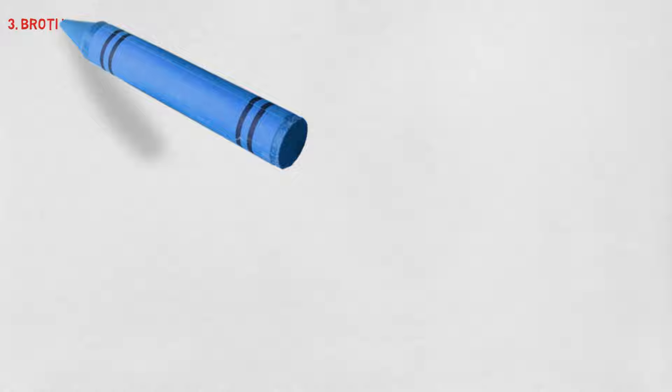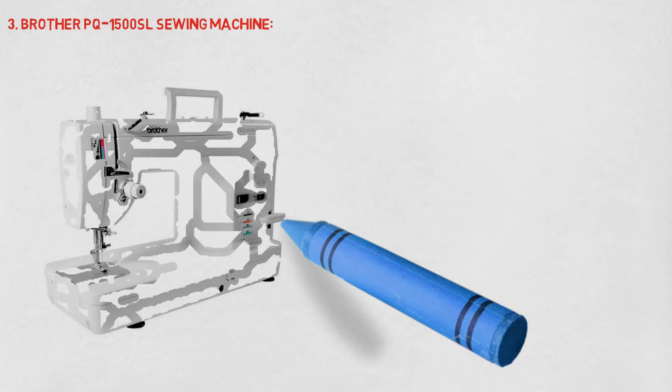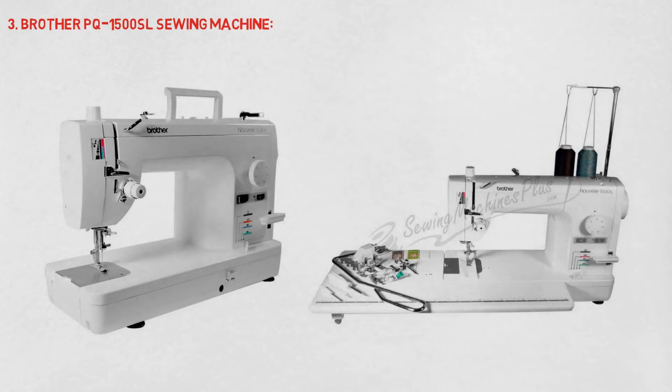Next, Brother PQ1500SL Sewing Machine. The best sewing machine for handling challenging fabrics is the Brother PQ1500SL which is available for purchase. For works of a larger scale, it is fantastic. It's a straight-stitch sewing machine that can sew at a speed of up to 1,500 stitches per minute.